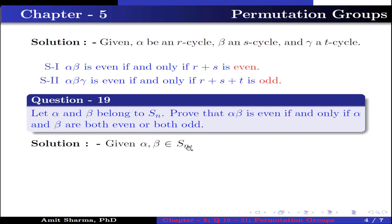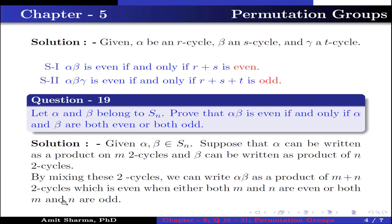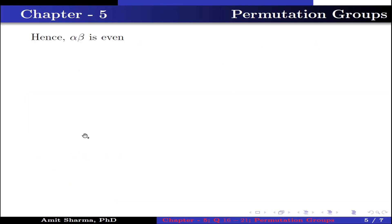Given α, β belongs to Sₙ. Suppose α can be written as product of m 2-cycles and β can be written as product of n 2-cycles. By mixing these two cycles, we can write αβ as a product of m + n 2-cycles, which is even when both m and n are even or both m and n are odd. Hence, αβ is even if and only if α and β both are even or both are odd.